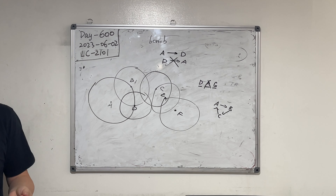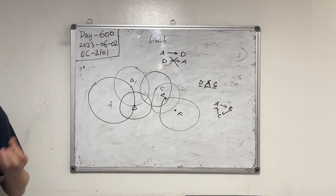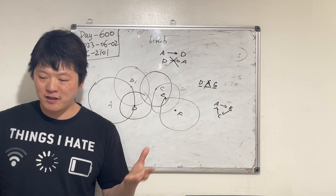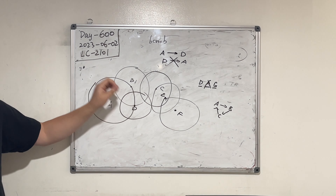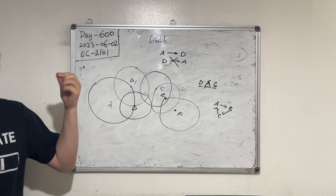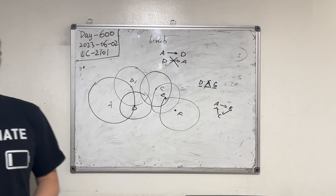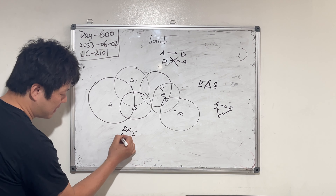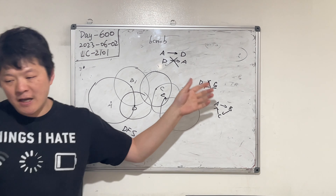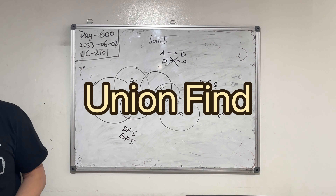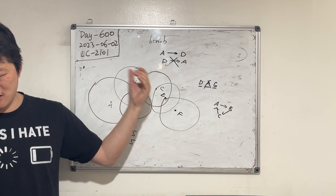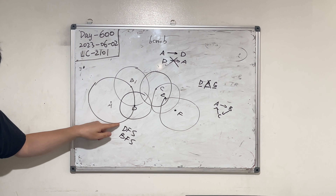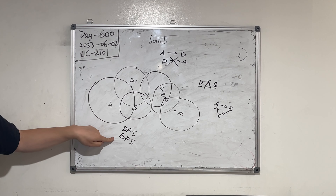In this directed graph, we want to find out the maximum number of connected components — the maximum number of connected vertices. We can visualize this problem as finding the maximum connected vertex count in a directed graph. We can use depth-first search or breadth-first search. Union Find is not suitable here because it's a directed graph — A to D doesn't mean D links back to A.